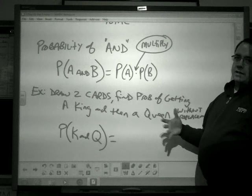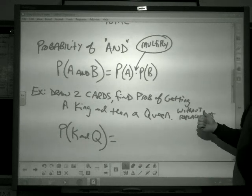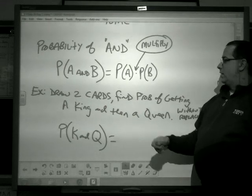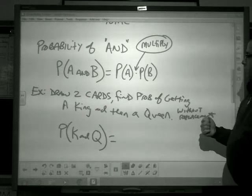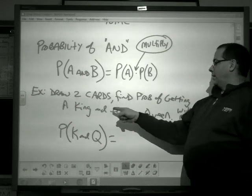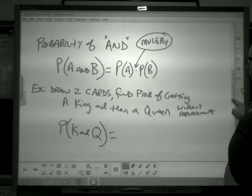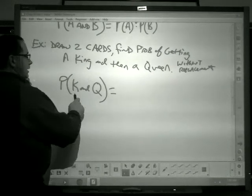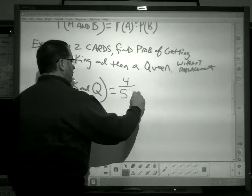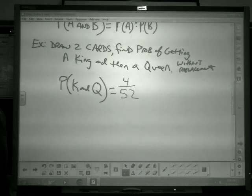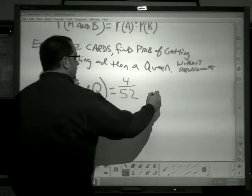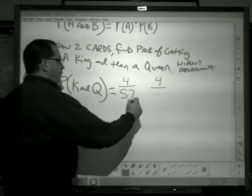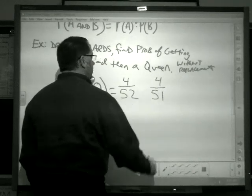The other piece of information that needs to be told to us is with or without replacement. In this case, I'm going to talk about what if I don't replace the card back in the deck. So I draw two cards. What's the probability of getting a king and then a queen? If I draw a card out of a deck, the probability of getting a king is four out of 52. The probability of getting a queen is four queens, but if I have not replaced a card, there are only 51 cards left in the deck.